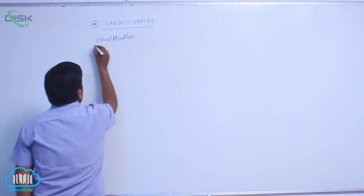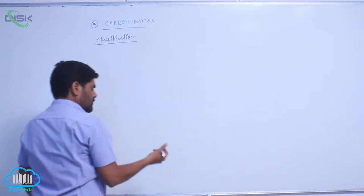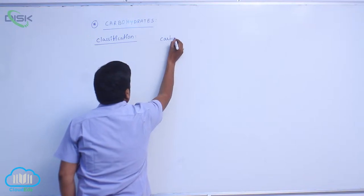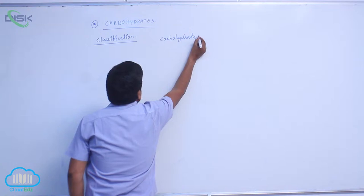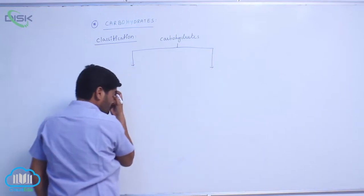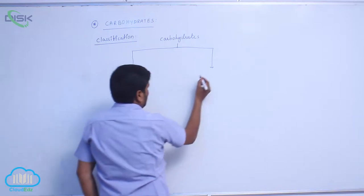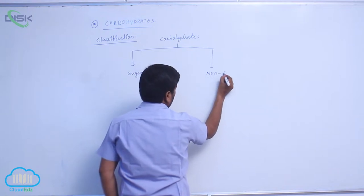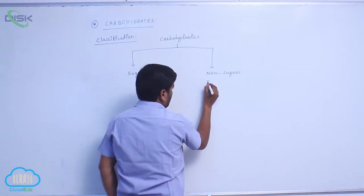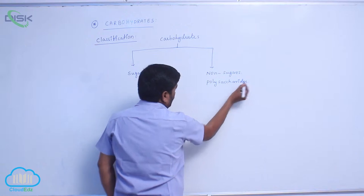Classification of Carbohydrates. Carbohydrates are classified into two types based on nature. The first type is sugars, and the second type is non-sugars. These non-sugars are known as polysaccharides.